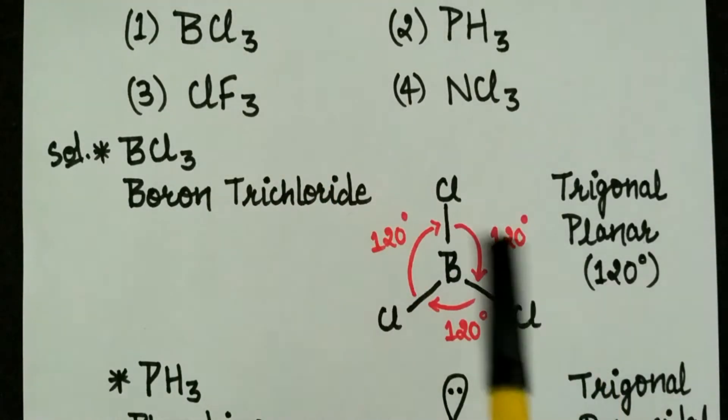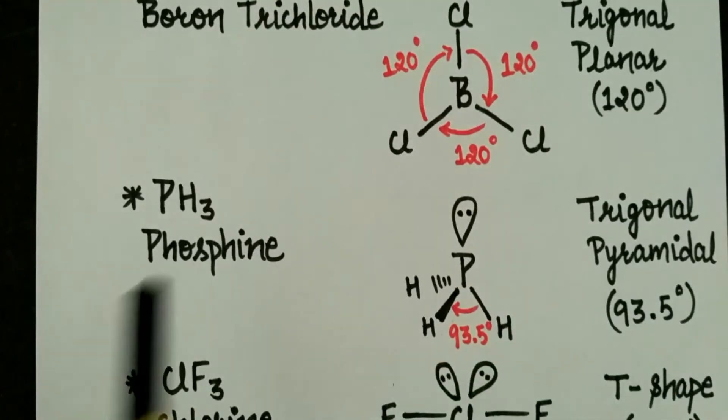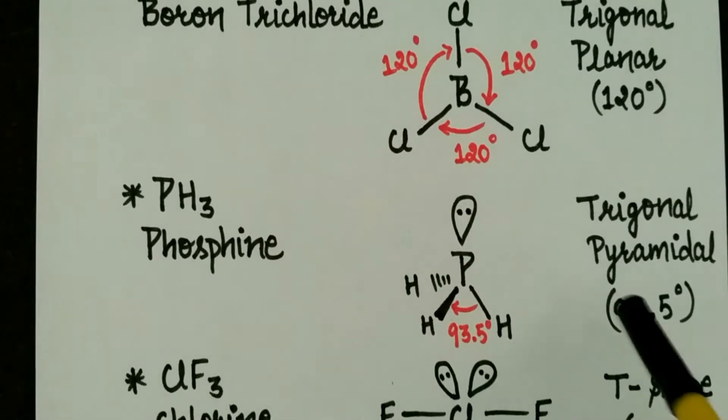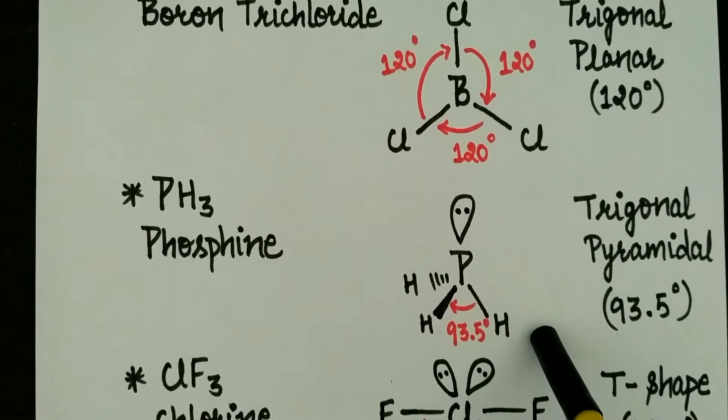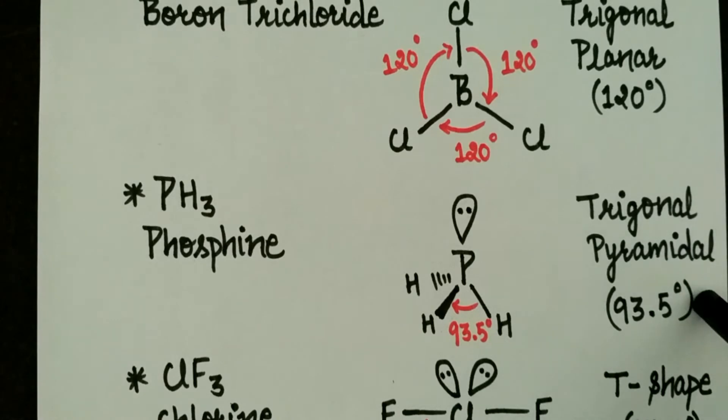But if we see another option, we have PH3. Its name is phosphine and its structure is like this. It has trigonal pyramidal structure and has an angle of 93.5 degrees.